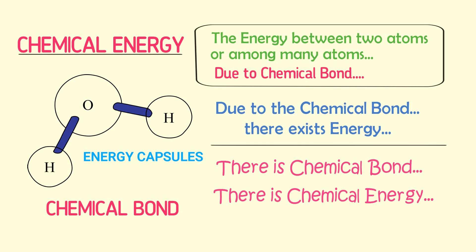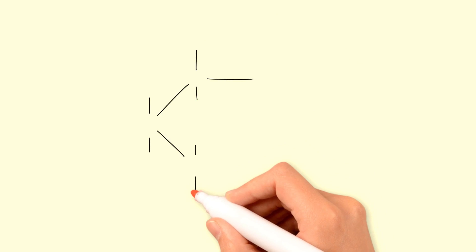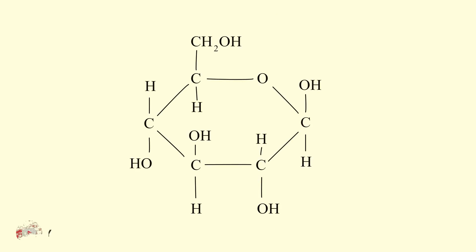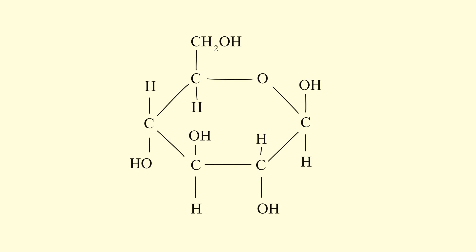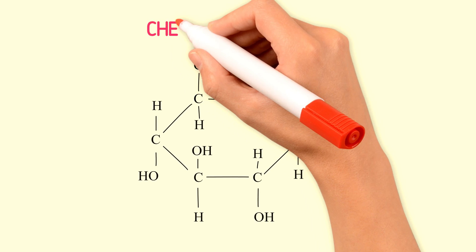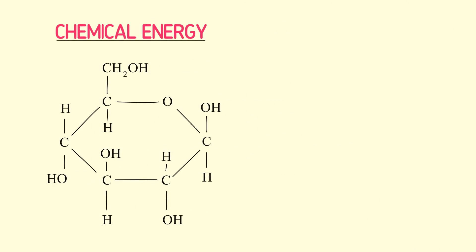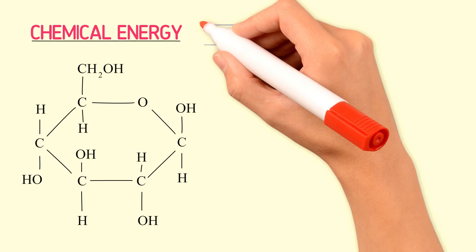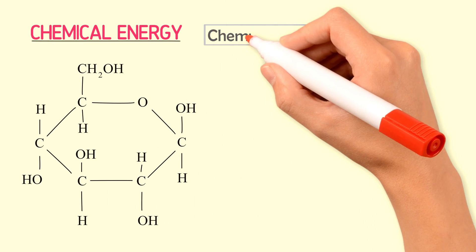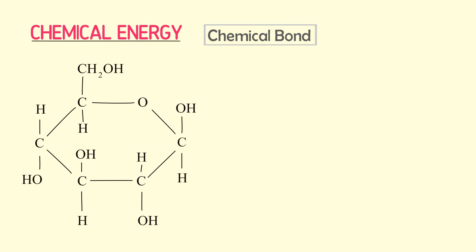Now let me give you another example. Let's consider a monosaccharide sugar like glucose. There is a chemical bond among all the atoms in glucose, so this glucose molecule possesses chemical energy because there exist chemical bonds among all the atoms in glucose.